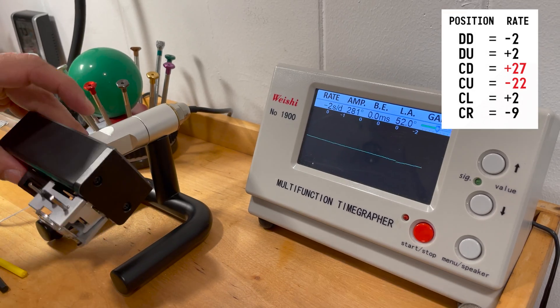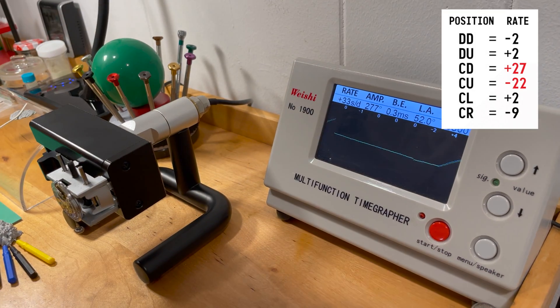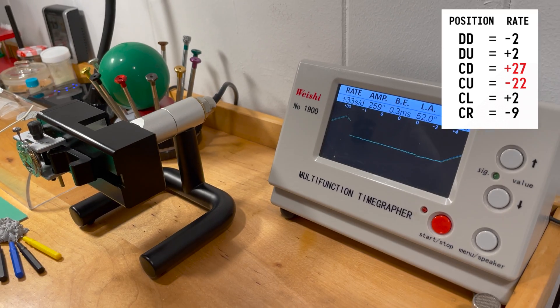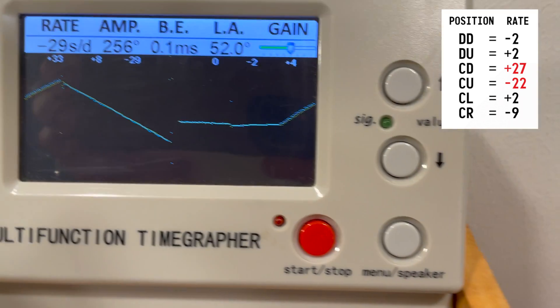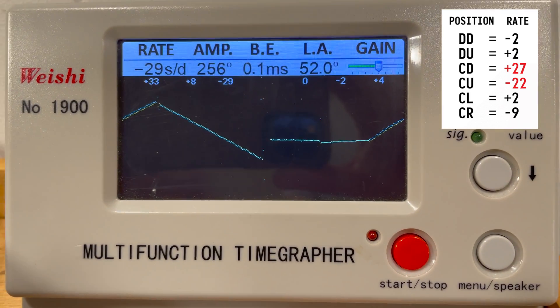But something different happened in crown down and crown up. Crown down, we got a rate of 27 seconds per day. And in crown up, we had minus 22 seconds per day. So that's a huge shift in positional variation and rate. We call that delta.